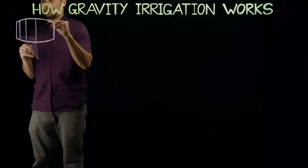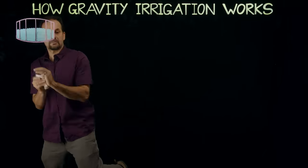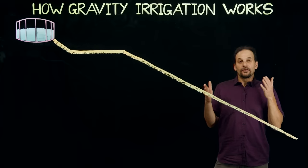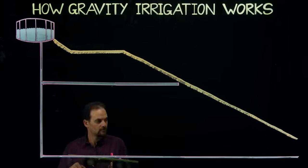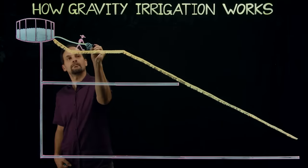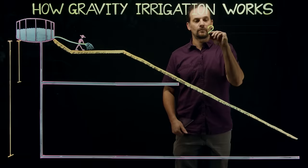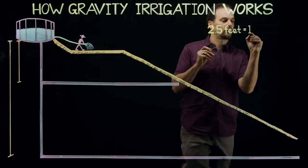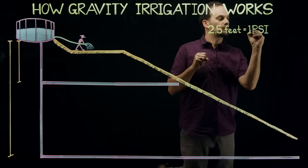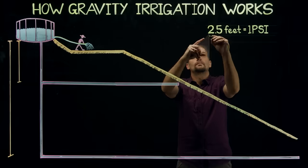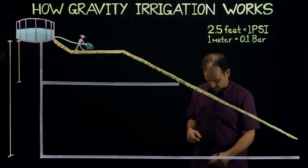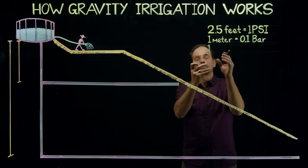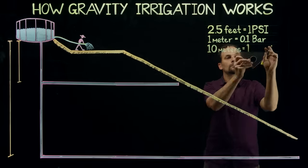The most important variable in this equation is the elevation, or head, of the water. The height of the water above its point of use is a key factor in the amount of pressure available. The key number to know is that for about every 2.5 feet of head, the water pressure is one psi, or pound per square inch. In metric, every one meter is 0.1 bar of pressure, and ten meters equals one bar.